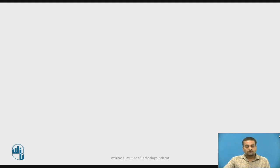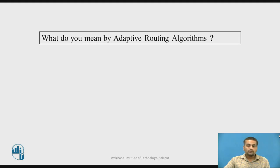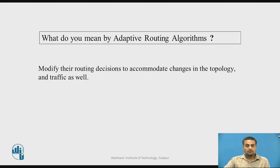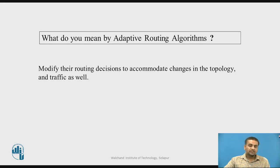You may pause the video and answer: what do you mean by adaptive routing algorithm? An adaptive routing algorithm modifies the routing decisions or the routing tables to accommodate changes in the network topology and changes in traffic as well. These adaptive algorithms are also called dynamic routing algorithms.